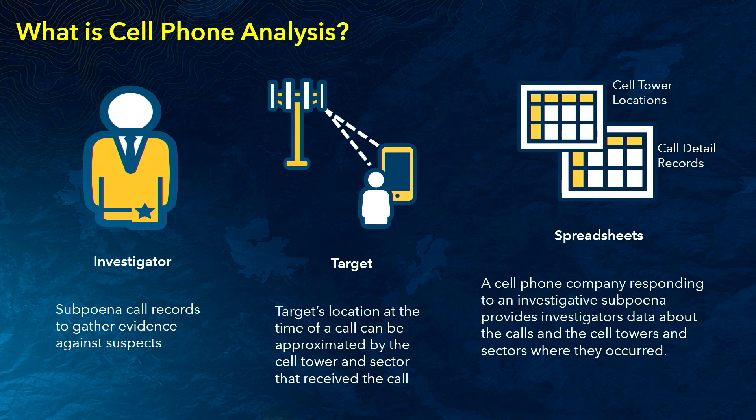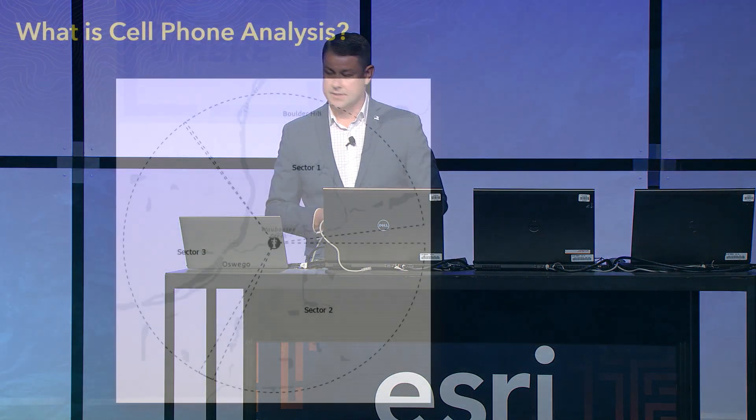To use cell phone data, an investigator needs to subpoena call records of a target from a cell phone service provider like Verizon or AT&T. Investigators typically receive back two spreadsheets: one of the call records themselves and one about the locations where the cell towers and sectors are where those calls were received. Because call data has no inherent geography of its own, it needs to be associated to the cell tower and sector in which it occurred in order for analysts to map and perform spatial analysis on it.